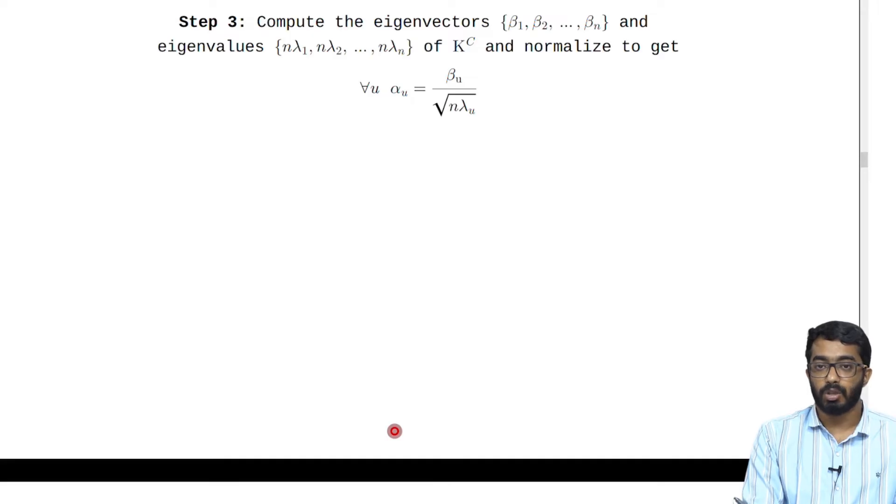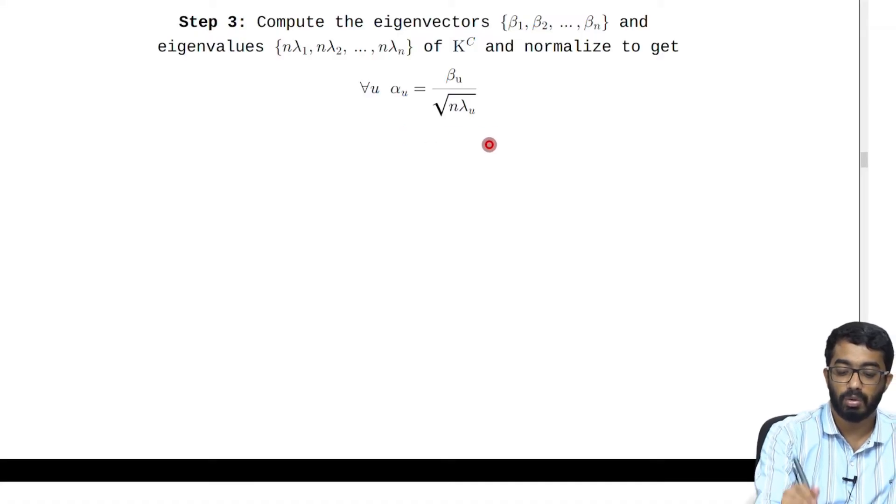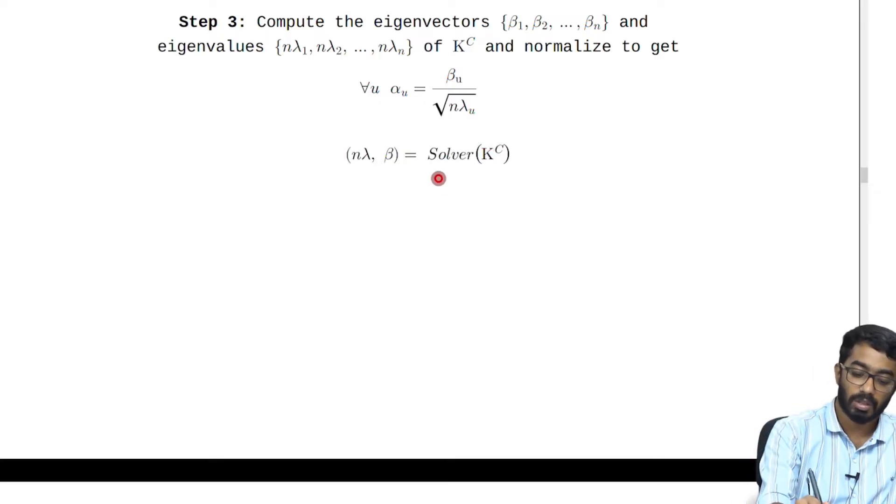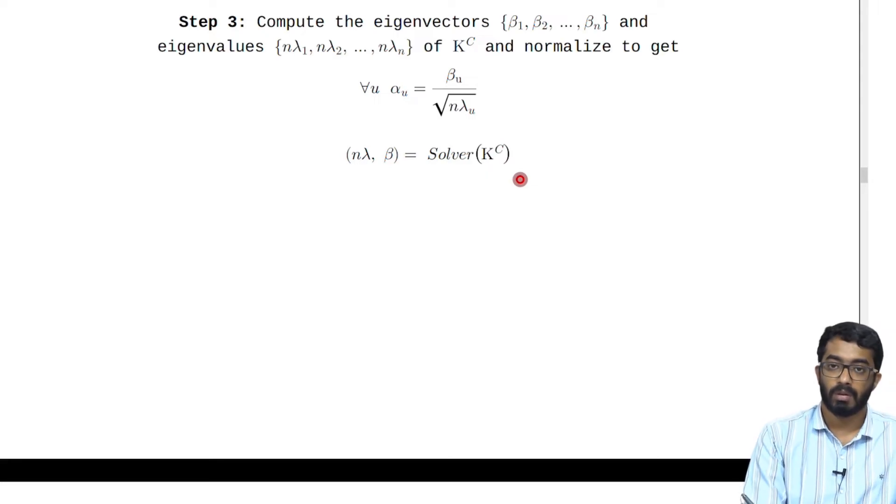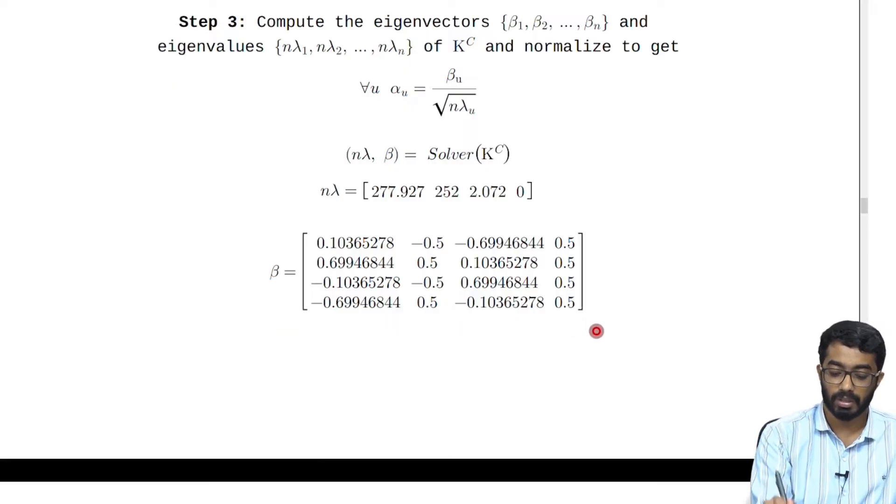Step 3 is to compute the eigenvectors beta_1 to beta_n and eigenvalues n lambda_1 to n lambda_n of K_c and normalize to get alpha_u which is given by beta_u divided by square root of n lambda_u. We get n lambda and beta of K_c using a solver function. Using the solver function we get n lambda to be this matrix and beta to be this matrix.